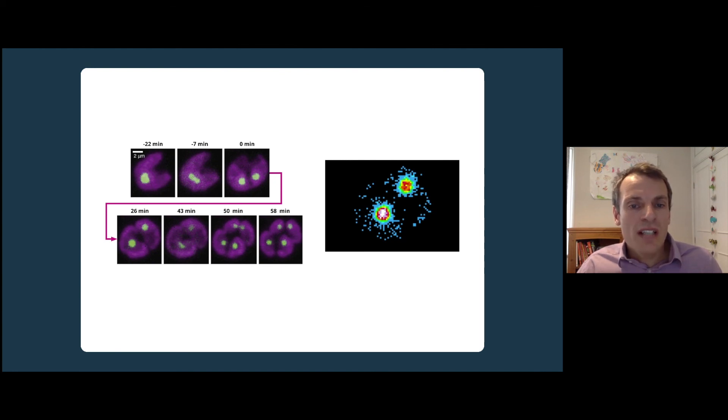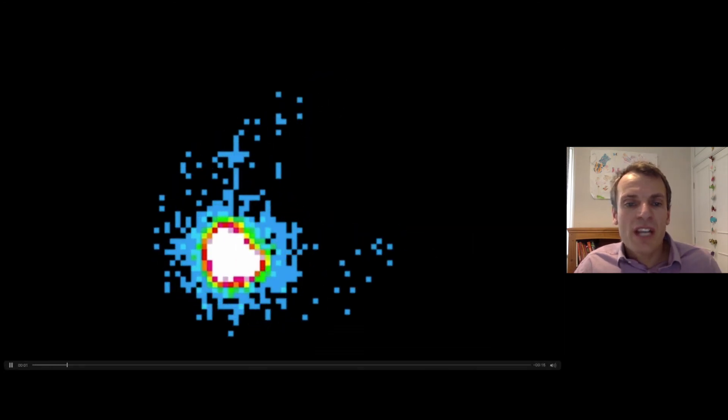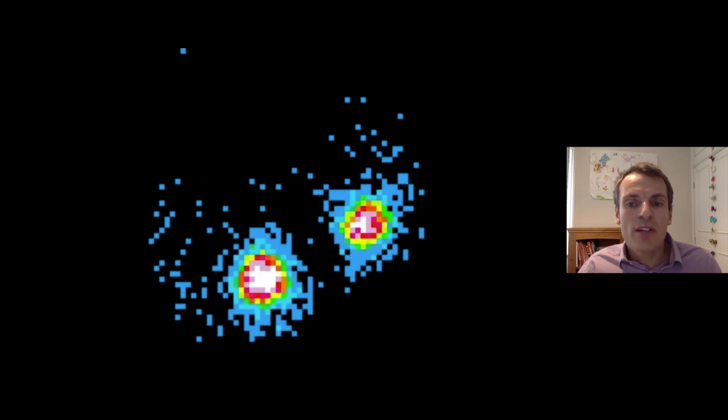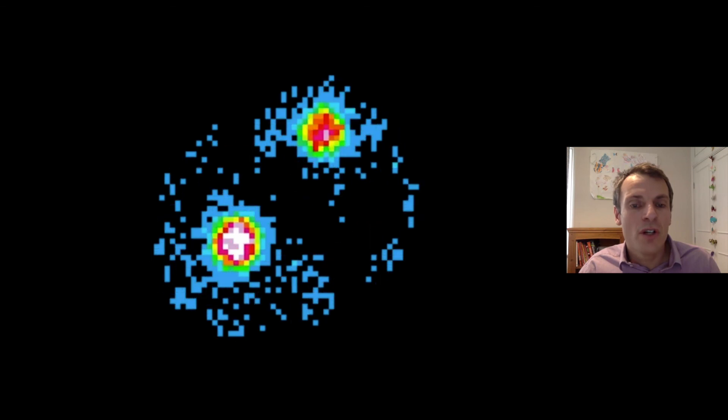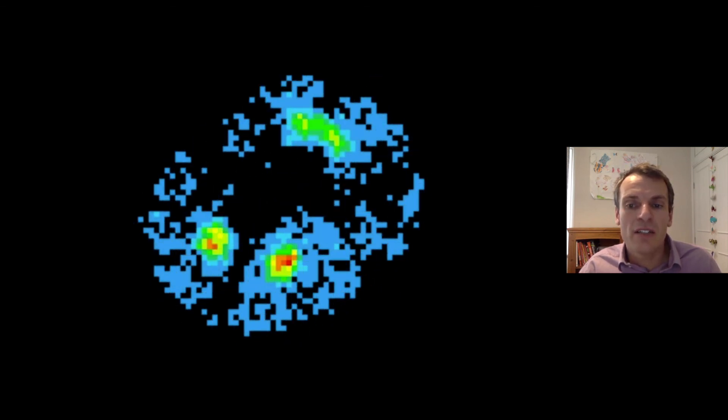We can watch this happening live. Now we can see a movie of the same division events, just with the pyrenoid shown. Here you can see a single pyrenoid that gets stretched, splits, and forms two new pyrenoids. This then repeats for the second division event.